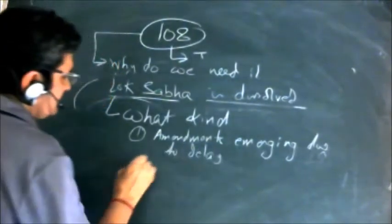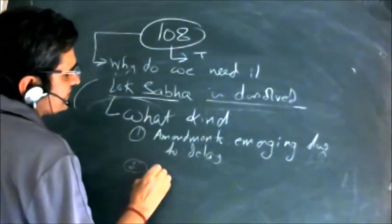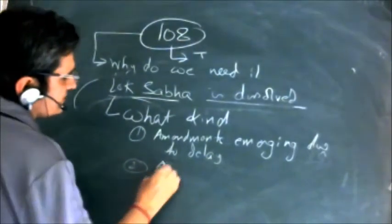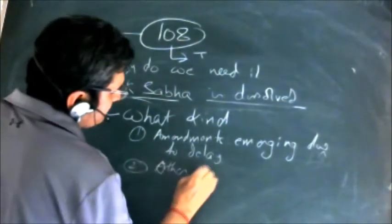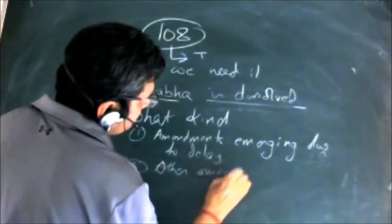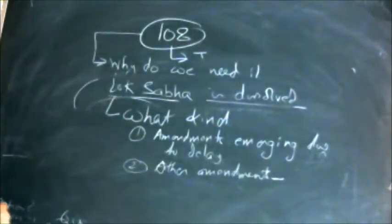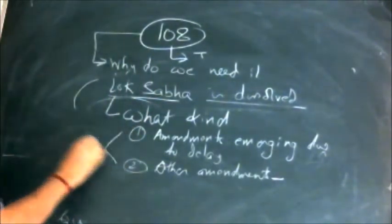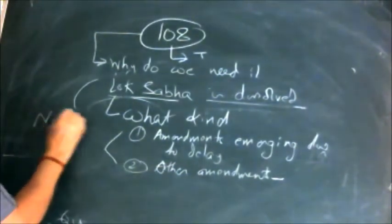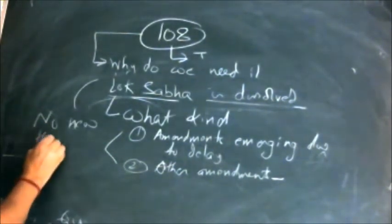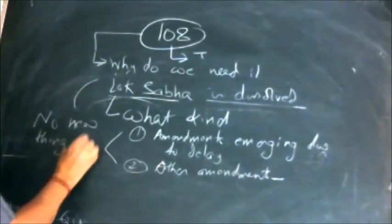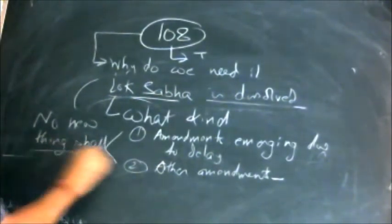And the other amendments on which there was disagreement - the amendments which were proposed by one house and not agreed by the other. No new thing will be brought up. Only these two categories are allowed.